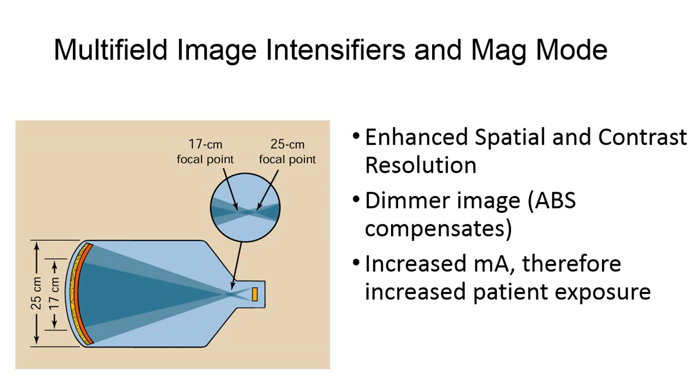When magnification mode is selected, this simply shifts the focal point within the image intensifier closer to the input side. As this happens, the electron field widens or gets larger at the output. Since the size of the output phosphor does not change, this just causes a smaller portion of the patient anatomy to be visible within the field of view. This helps with image resolution since the number of pixels available at the output is the same, yet the area of anatomy inputted into the image intensifier is smaller, meaning there are more pixels per area of anatomy.